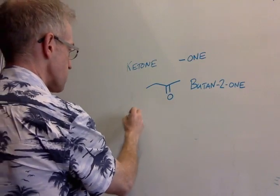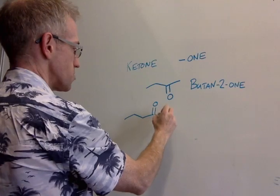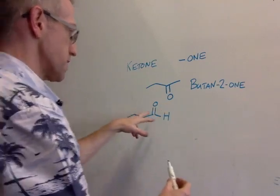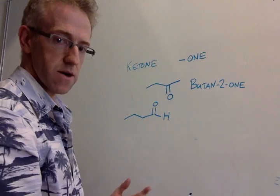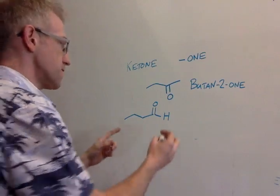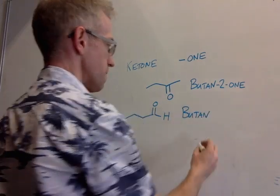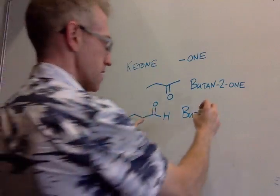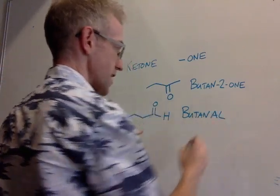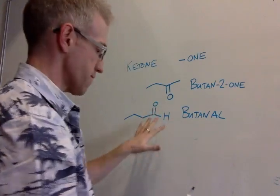If we have the corresponding aldehyde, so a four carbon chain, and the carbonyl is on the end, so now we have an aldehyde. Then the thing we put on the end at the start is the same. But the thing that denotes that it's an aldehyde is that you put an -al on the end. So we get -al, and that gives that functional group.